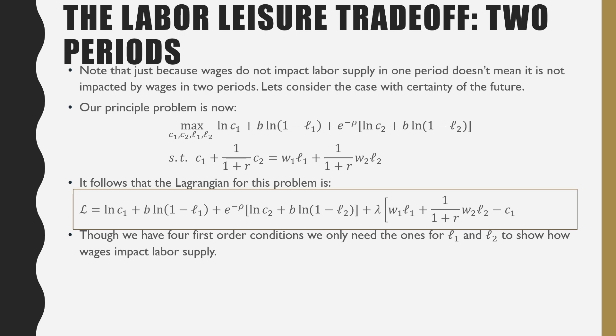Our principal problem is now maximizing our instantaneous utility function, where we have consumption in period 1 and labor supply in period 1, plus the discounted consumption in period 2 and labor in period 2,